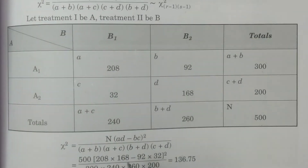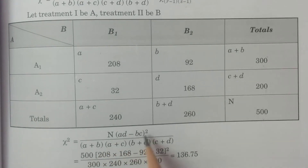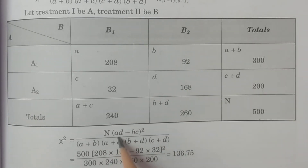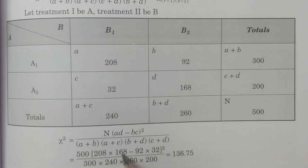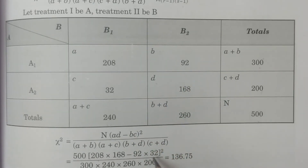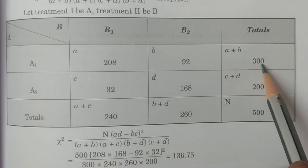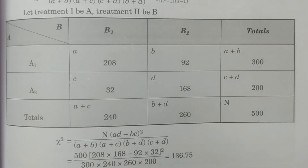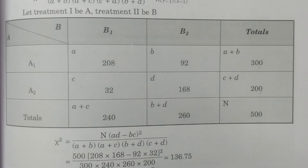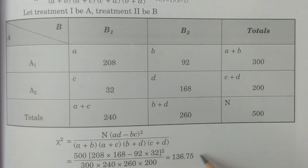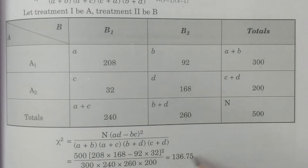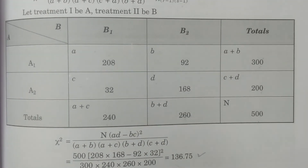Now applying the formula: chi-square equals N times (ad minus bc) squared divided by (a+b)(a+c)(b+d)(c+d). Substituting: N=500, ad=208×168, bc=32×92, a+b=300, a+c=240, b+d=260, c+d=200. The calculated value comes out to approximately 136.75.